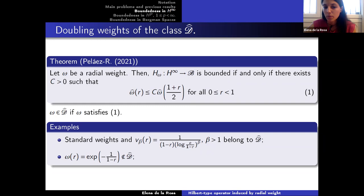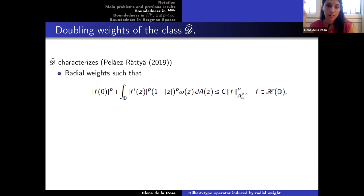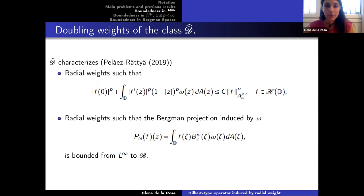When omega satisfies this condition, we say omega is in D-hat, or omega is an upper doubling weight. Examples include standard weights and increasing weights V_beta for beta greater than 1, which belong to D-hat, while exponential weights do not. This shows that belonging to D-hat restricts how fast omega can decrease as r goes to 1. The class D-hat also appears in other natural operator theory questions: it describes weights for which the Littlewood-Paley type inequality holds, and for which the Bergman projection induced by omega is bounded from L-infinity to the Bloch space.